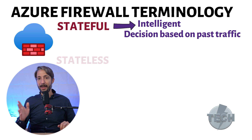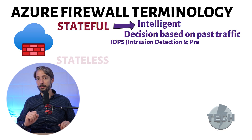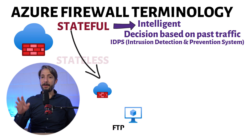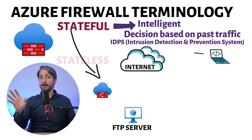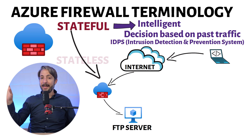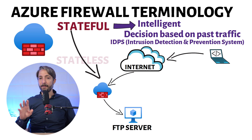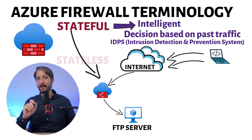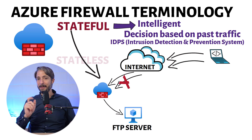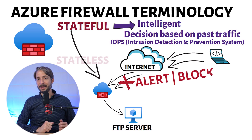One major component here in play is IDPS — intrusion detection and prevention system. Let's say you want to have an FTP server accessible publicly from the internet. You open up port 21 on the firewall and everything is fine. If a malicious user decides to brute force through your FTP server, a stateful firewall can detect this. Based on the configuration, it can then alert and/or block the traffic attempts.